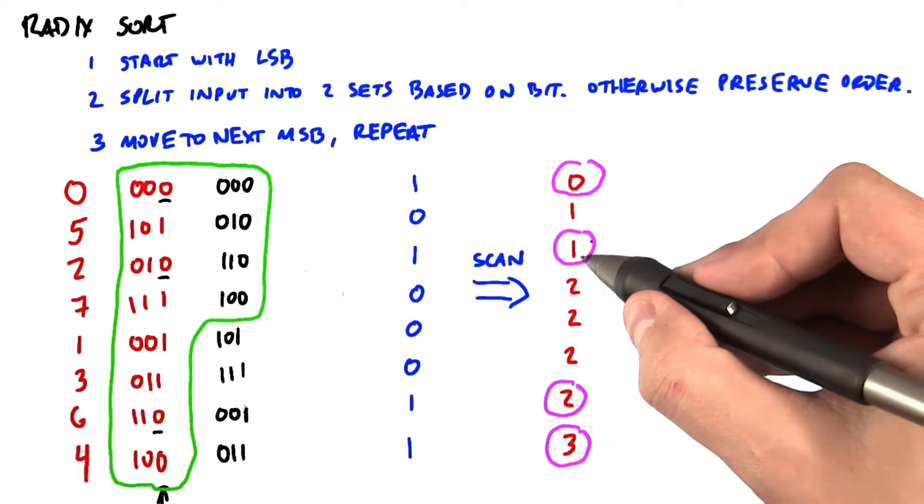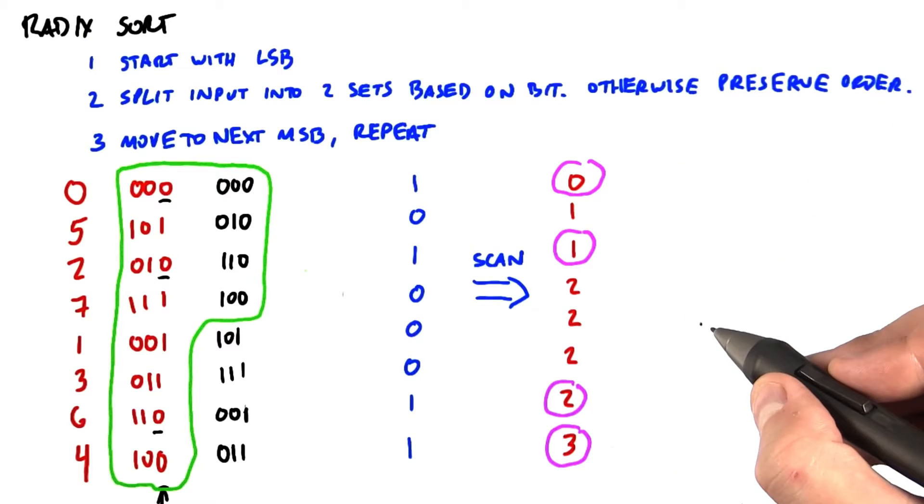So we're going to scatter this element to output 0, this element to 1, this element to 2, and this element to 3.